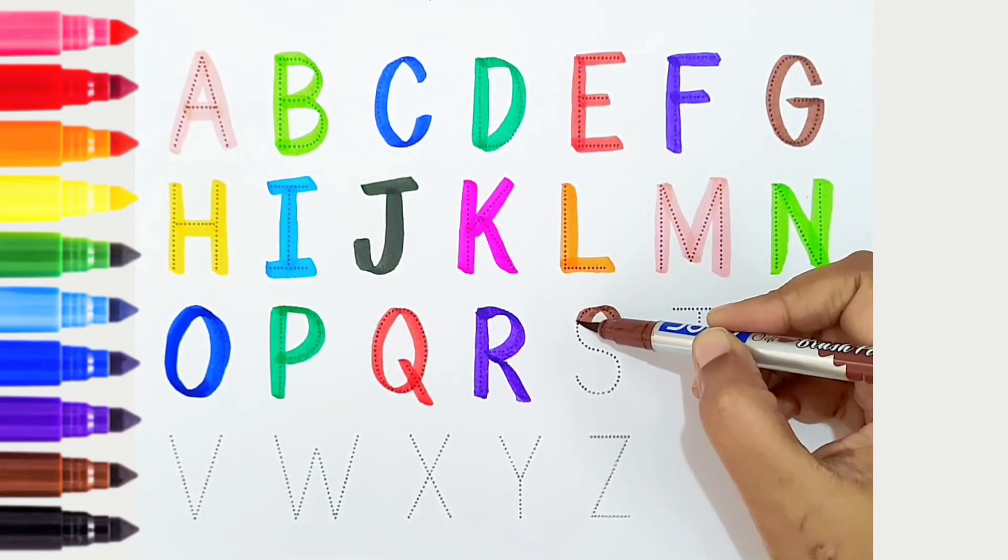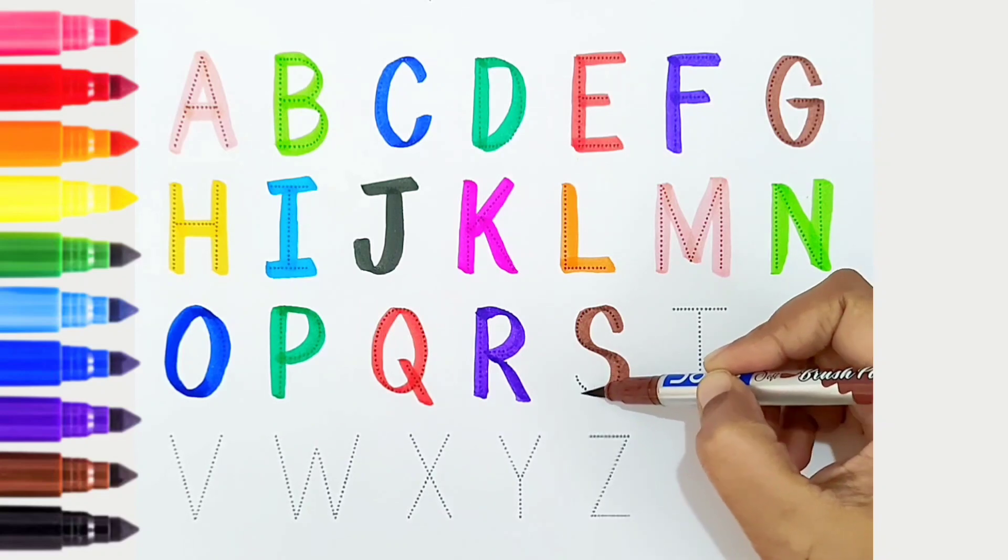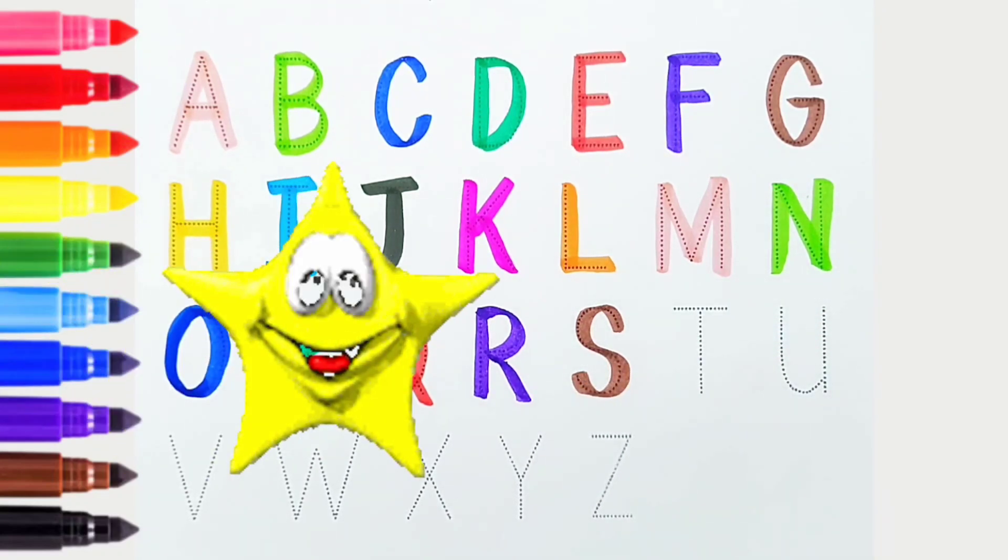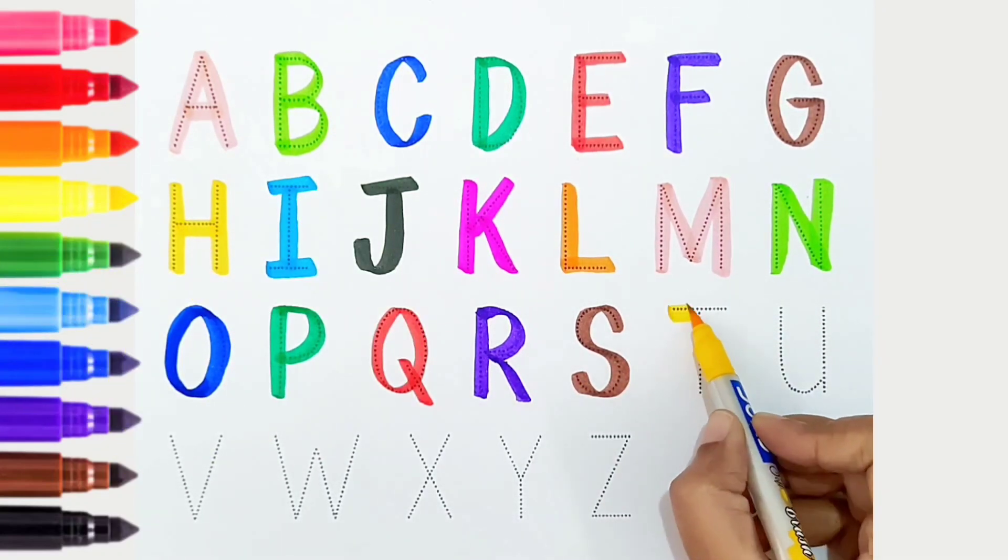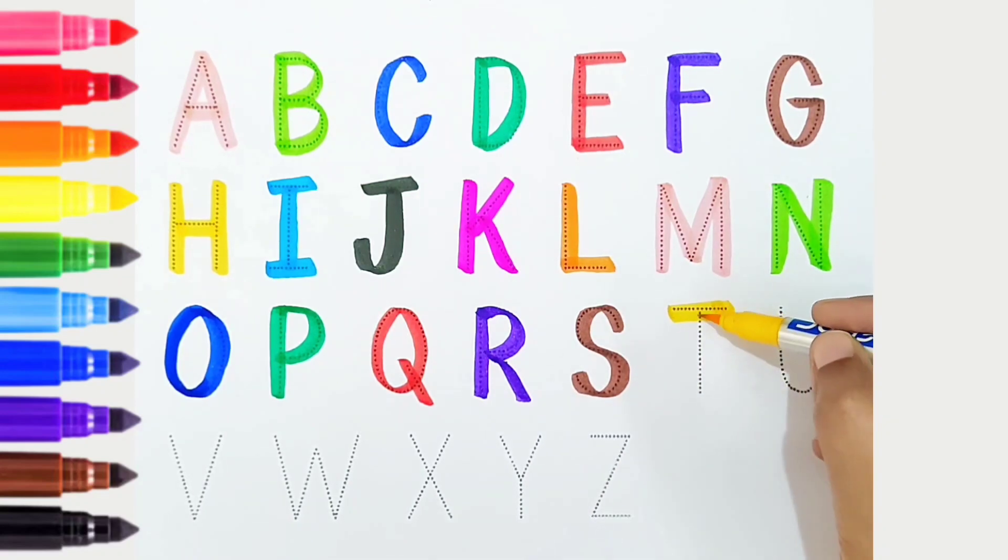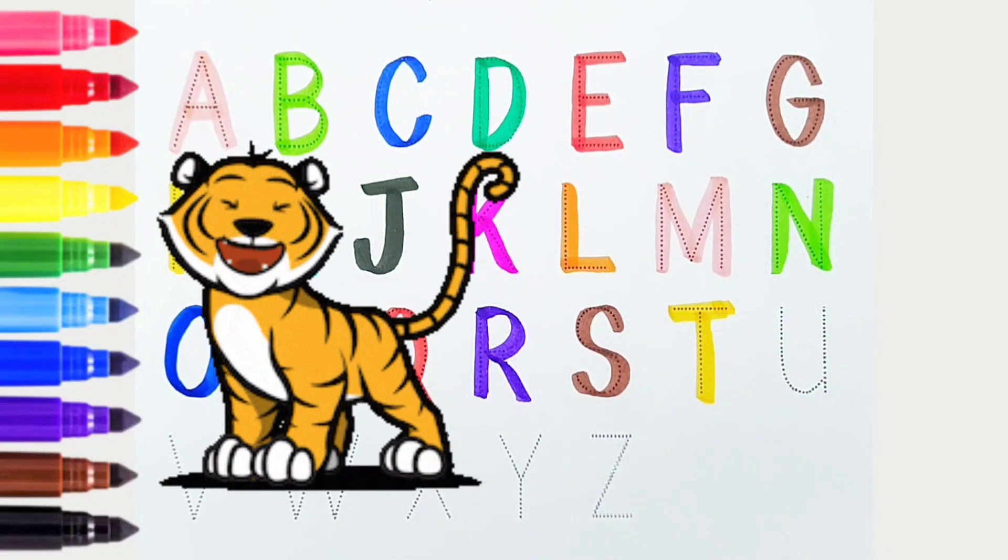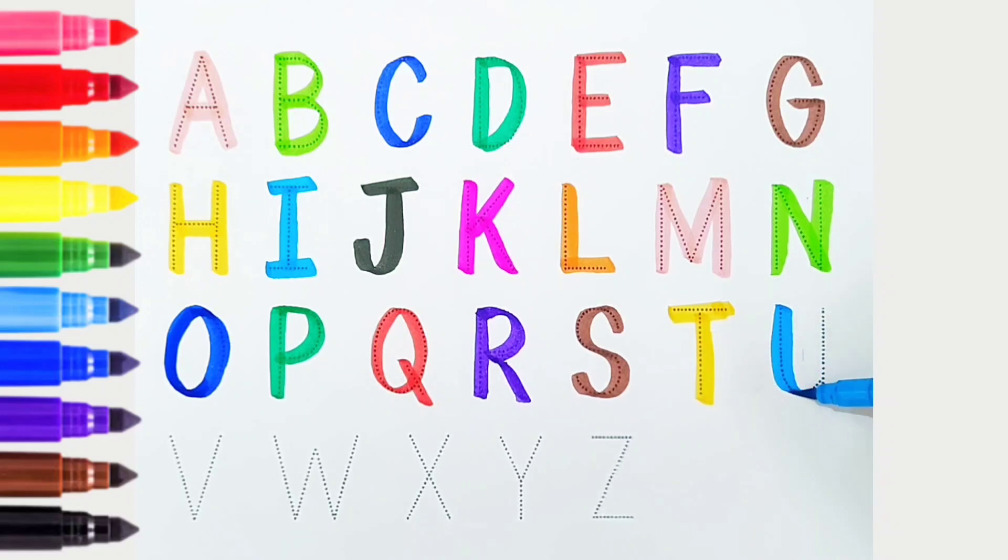S, brown color, S is for star. T, yellow color, T is for tiger. U, light blue color, U is for umbrella.